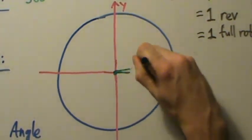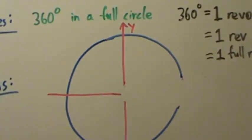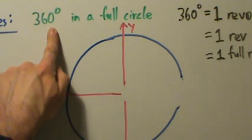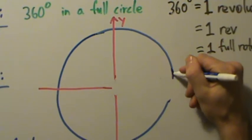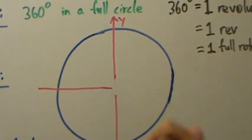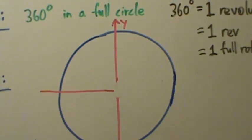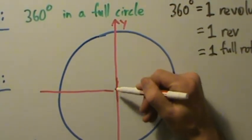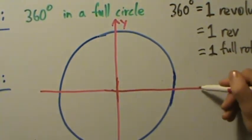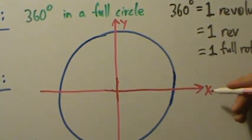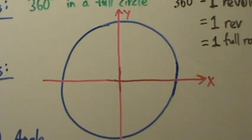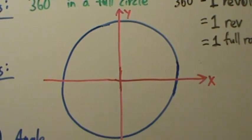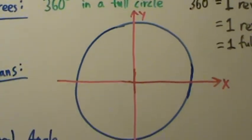If you're wondering where 360 degrees comes from — why not some other number — nobody really knows for sure. Some common theories are related to ancient astronomy and the length of the calendar year. If you're interested, you could check out the Wikipedia page for degrees, the angle measurement, which has a good section on the history and common theories.